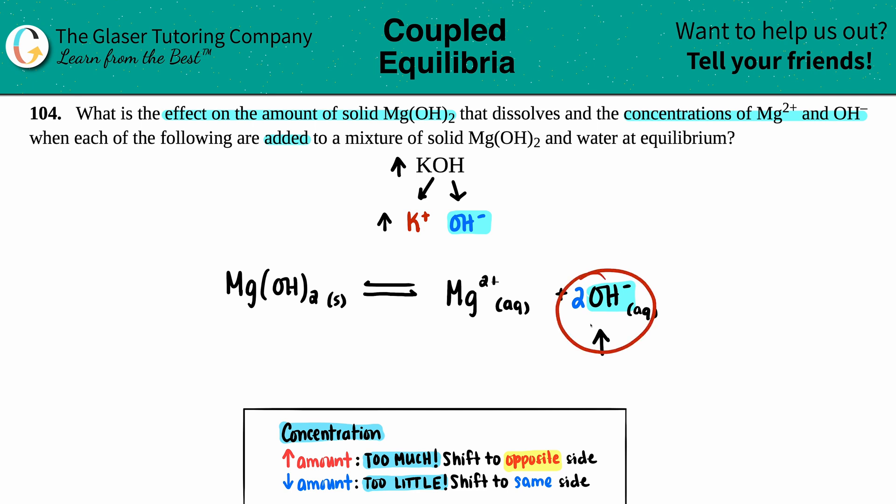So if you're adding OH- here, I want to shift to the reactant side. I want to go away. And wherever you're going to Mg(OH)2, that's going to increase. So I got two answers now. And now if you're producing Mg(OH)2, that means that it had to have come from Mg2+. So this will go down.